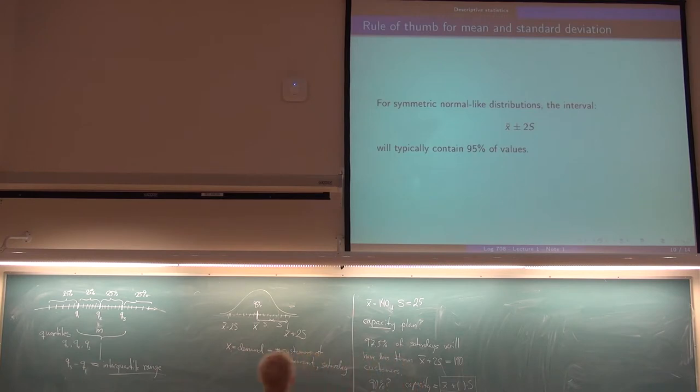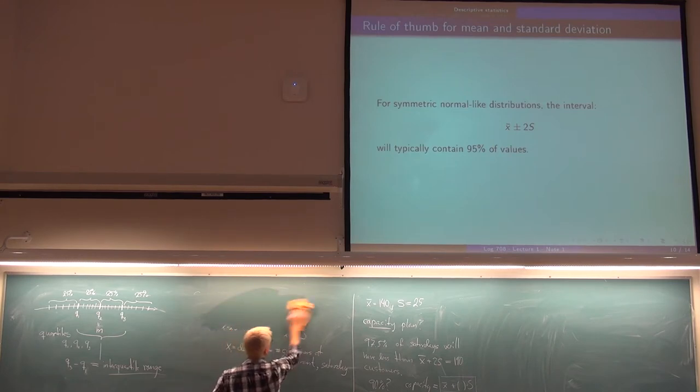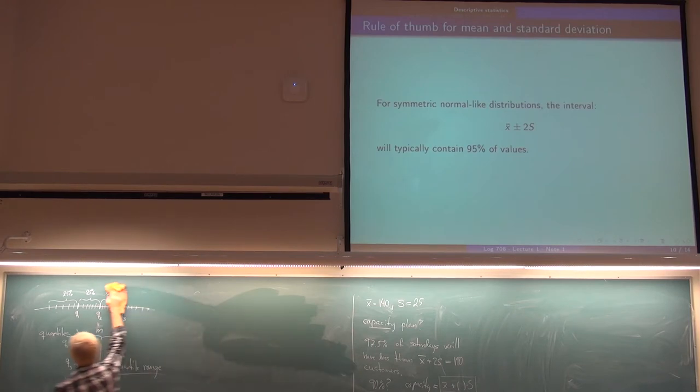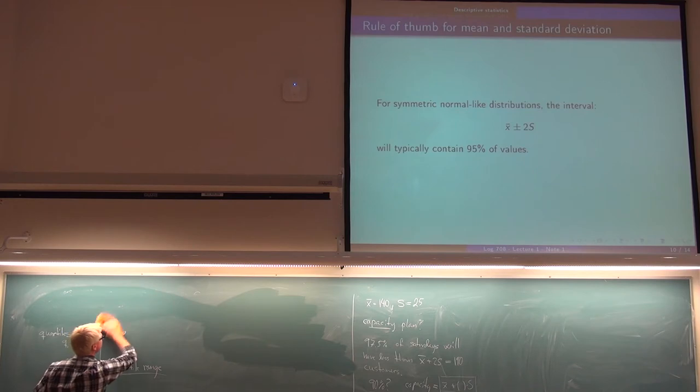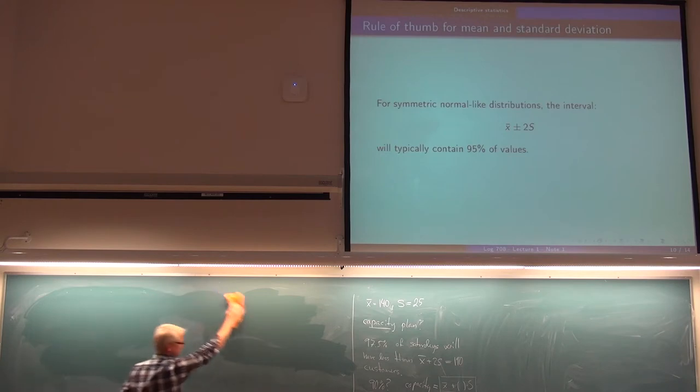So, then we have central tendency with mean and median. We have sample variation with mainly standard deviation, sometimes interquartile range. Then there is another very important descriptive measure, which is called correlation. And you, more or less, you all know about correlation, I guess. But we are going to do it carefully anyway.